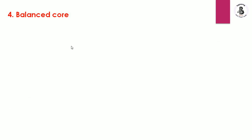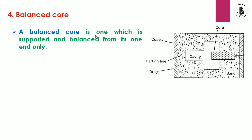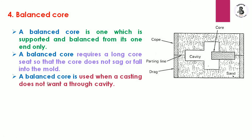The fourth is the balance core. The drag and cope are separated by a parting line, and the core is placed horizontally and well balanced in the sand mold and cavity — hence the name balance core. There is no requirement for core prints for support because the core balances itself in the molding sand. A balance core is supported and balanced from one end only. It requires a long core seat so that the core does not sag or fall into the mold. A balance core is used when a casting does not go through completely.